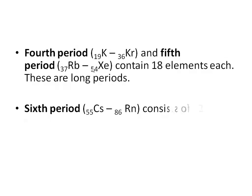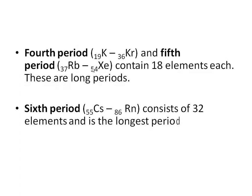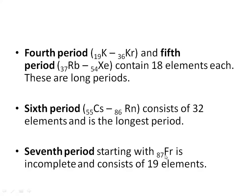The sixth period goes from cesium (atomic number 55) to radon (atomic number 86) and consists of 32 elements — making it the longest period, called the very long period. The seventh period starts with francium (atomic number 87), is incomplete, and consists of 19 elements so far because there are still undiscovered elements. In summary: period 1 is very short, periods 2 and 3 are short, periods 4 and 5 are long, period 6 is the longest, and period 7 is incomplete.